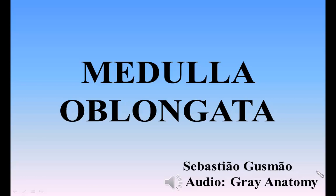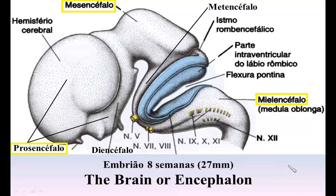The Human Body, Part 4, by Henry Gray. The hindbrain, Part 1. The encephalon, or brain — general considerations and divisions.